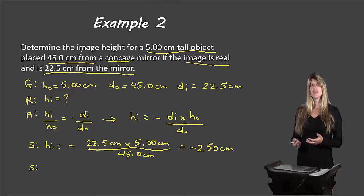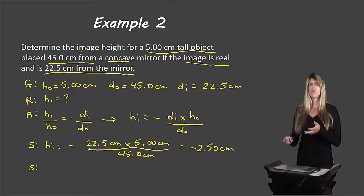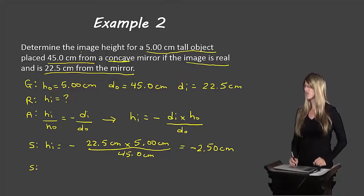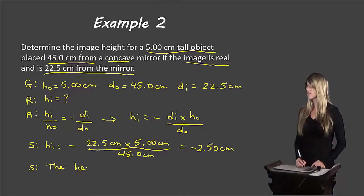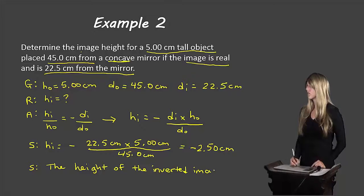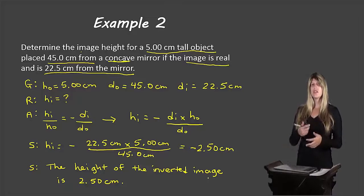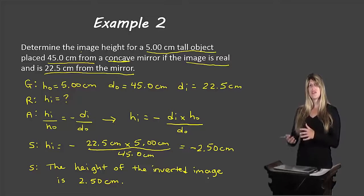The actual height of the image is 2.50 centimeters — it's 2.50 centimeters inverted, and that's where the negative comes in. So when we state our answer, we say: the height of the inverted image is 2.50 centimeters. We state 'inverted' in words rather than using a negative sign, because they represent the same information.